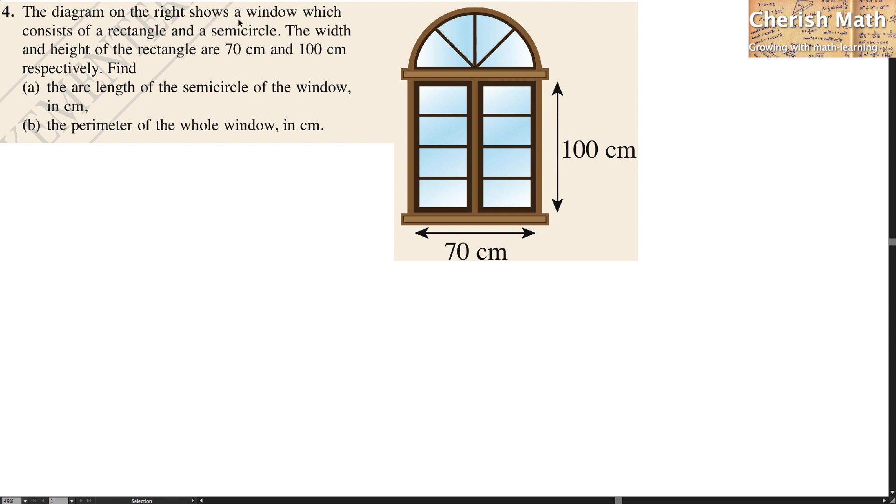The diagram on the right shows a window which consists of a rectangle and a semicircle. The width and height of the rectangle are 70 cm and 100 cm respectively.